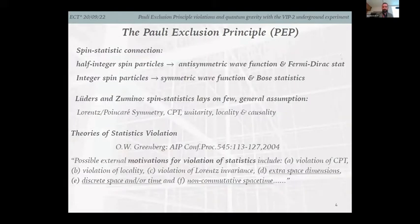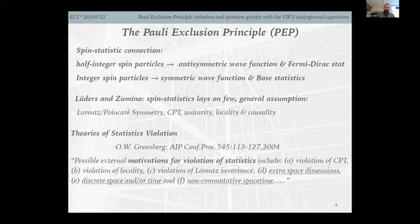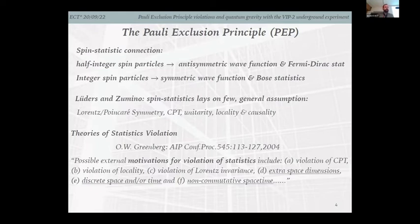With this introduction, we can go a bit further to the connection with the spin-statistics theorem. Half-integer spin particles follow antisymmetric wave functions and Fermi-Dirac statistics; integer spin particles follow Bose-Einstein statistics. Lüders and Zumino demonstrated that the spin-statistics connection rests on very few general assumptions: Lorentz symmetry, CPT, unitarity, locality, and causality.